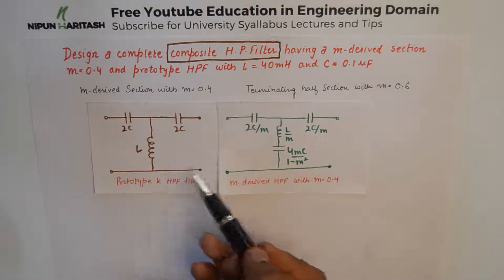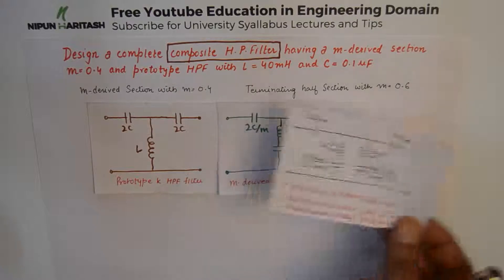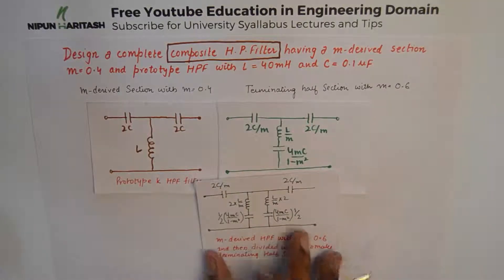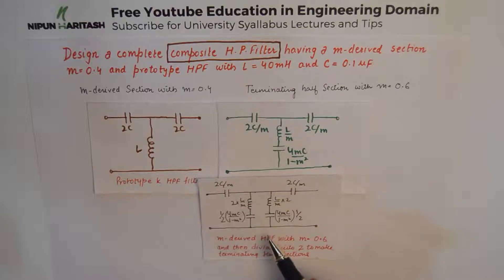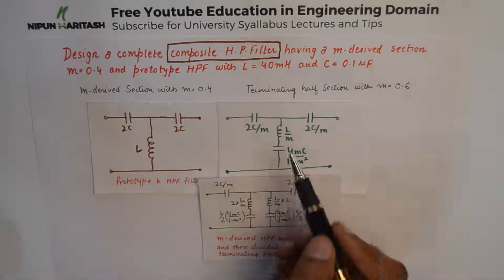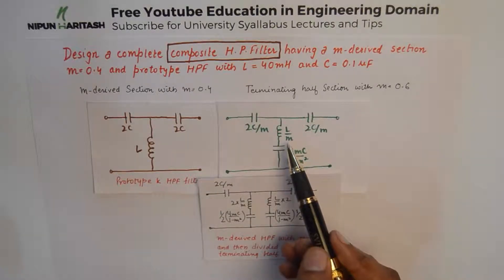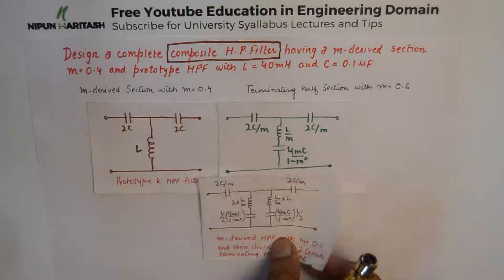Understanding the design specifications and component values of a prototype high pass filter and M derived filter section, we'll make another M derived section. This is an M derived T section, but this shunt branch has been divided into two parts because out of this M derived filter with M equal to 0.6, we will derive two terminating sections. When you divide L by M in shunt, you'll get twice of L by M, and if you divide this capacitance, you'll get this value into half.